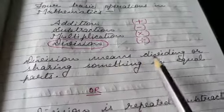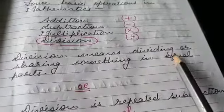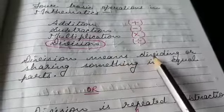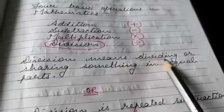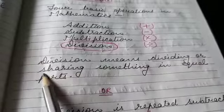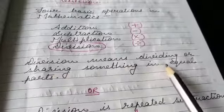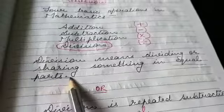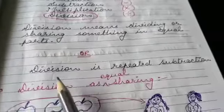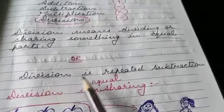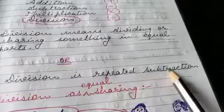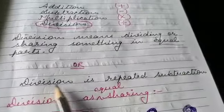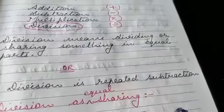Now we are going to start what is division. Division means dividing or sharing something in equal parts. We can also say that division is repeated subtraction.